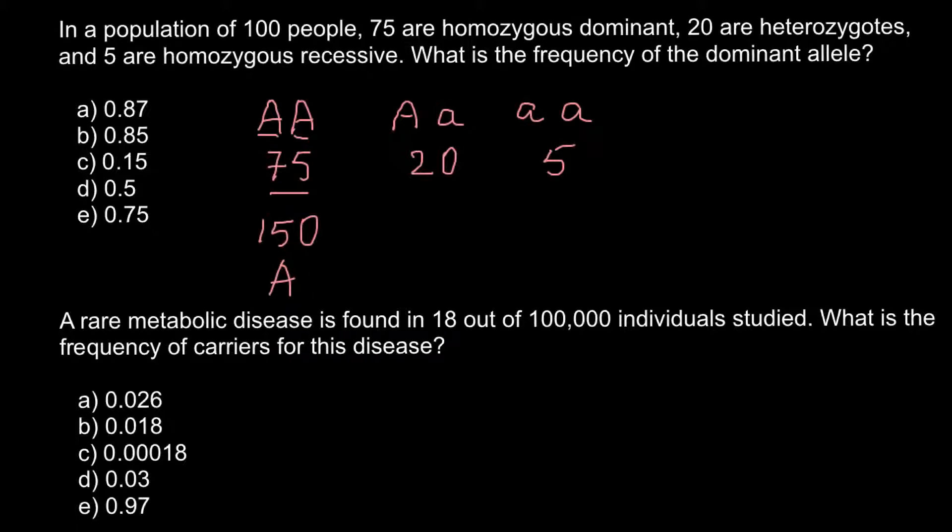And here for the heterozygous, as you see, 20 people would have 40 alleles. And out of those 40, 20 would be capital A. And 20 would be small a.